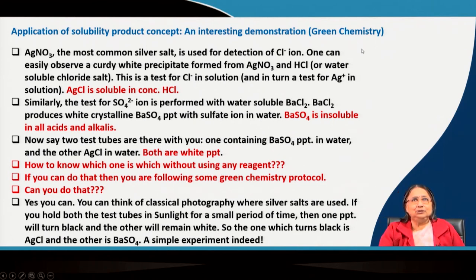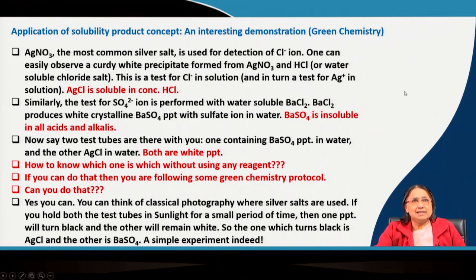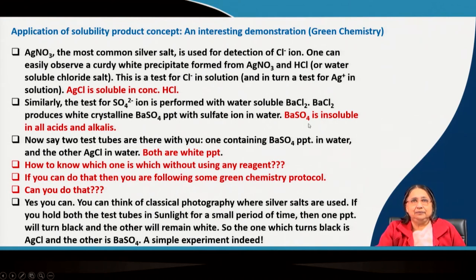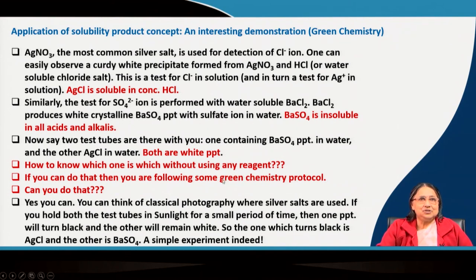Green chemistry requires doing something without using additional reagents or too many things. My question is: given two test tubes, one containing silver chloride precipitate in water and another containing barium sulfate precipitate in water, both white precipitates, and without any HCl to test — how can you tell which is silver chloride and which is barium sulfate? If you can do this without adding any reagent, that would be a green chemistry protocol. Can you do that?